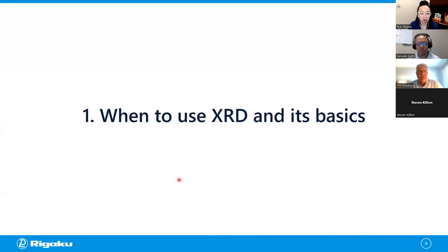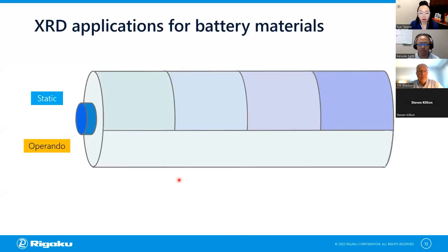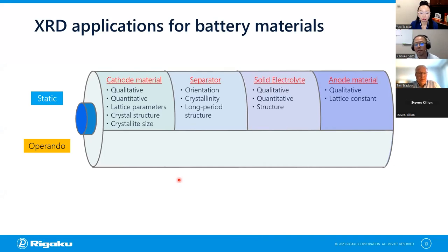All right, let's move on. First, let me discuss when to use X-ray diffraction for battery research and some of the basics. For static measurement, XRD targets the cathode, anode, separator, and electrolyte if it is solid. What we analyze is qualitative analysis — XRD finds the crystallographic phase, not the chemical composition. For example, if your sample includes aluminum and oxygen, XRD shows the aluminum oxide crystal phase, like corundum — not concentration values.